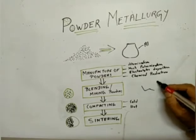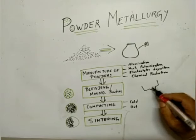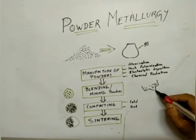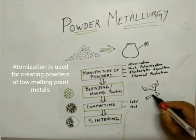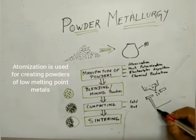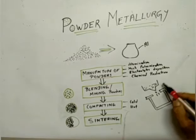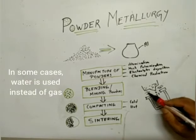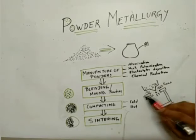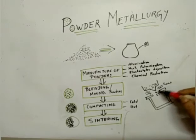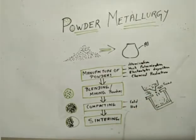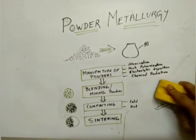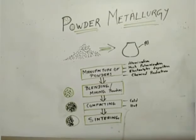In atomization, we keep the molten metal and force it through an orifice into a collecting chamber. High-pressure gas is injected from both sides — when this gas hits the jet of molten metal, the molten metal gets deposited in the collecting chamber in the form of powders. This is atomization.